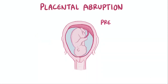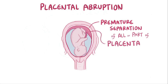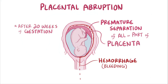Placental abruption is the premature separation of all or even just a part of the placenta from the uterine wall, resulting in hemorrhage or bleeding. This usually happens after 20 weeks of gestation and affects about 1% of pregnancies worldwide.